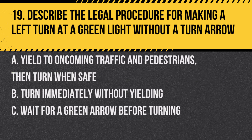Question 19. Describe the legal procedure for making a left turn at a green light without a turn arrow. A. Yield to oncoming traffic and pedestrians, then turn when safe. B. Turn immediately without yielding. C. Wait for a green arrow before turning. Answer: A. Yield to oncoming traffic and pedestrians, then turn when safe. Always yield when the light is green but without a dedicated turn signal.